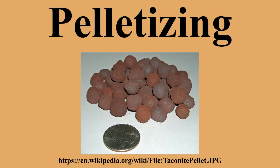Iron ore pellets are spheres of typically 6 to 16 mm, used as raw material for blast furnaces. They typically contain 67% to 72% Fe and various additional materials adjusting the chemical composition and the metallurgic properties of the pellets.